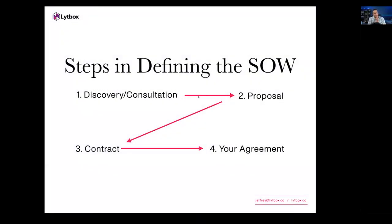Here are the steps we take in defining the SOW. First is discovery and consultation — the first call where we gather all the questions and information: how many pages, will there be a blog, what functionalities are needed. You can also use a spec sheet. Any way you gather information about what needs to be done on the website — those become your deliverables.